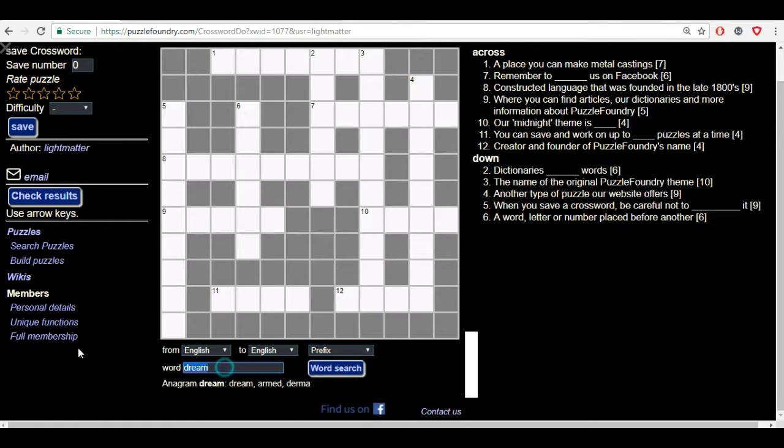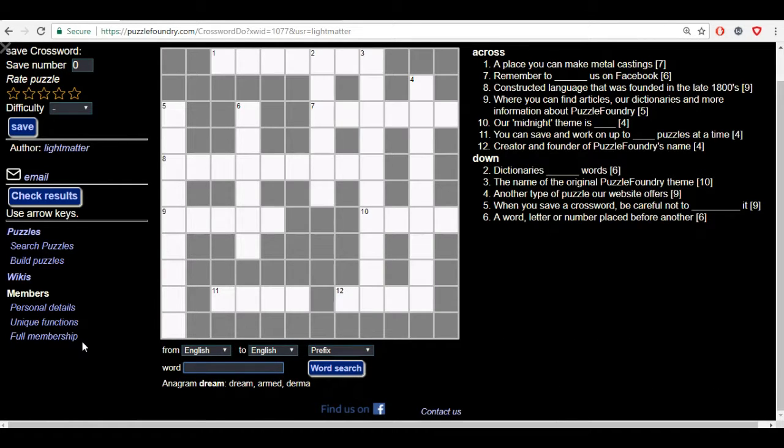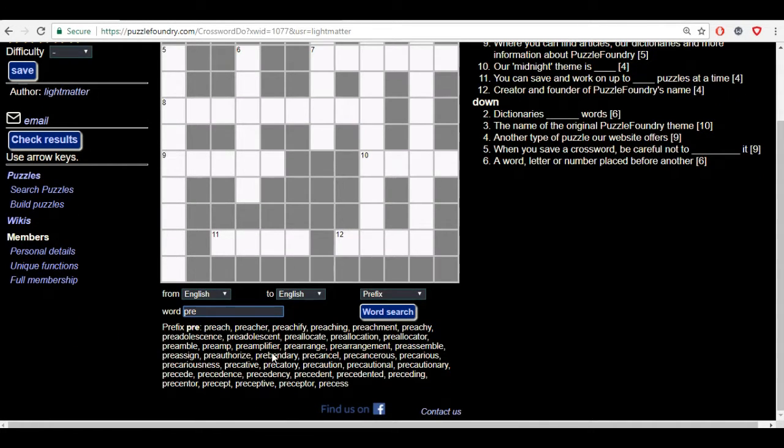Then we have the prefix. The prefix gives you a bunch of words with the prefix that you'd search for. So if you were to type something like 'pre' it'll give you a list of words that has pre as a prefix.